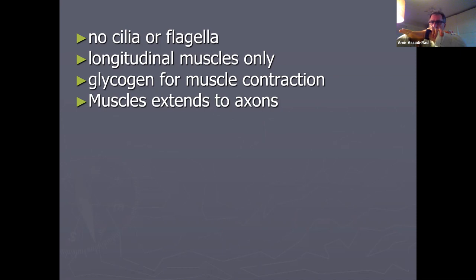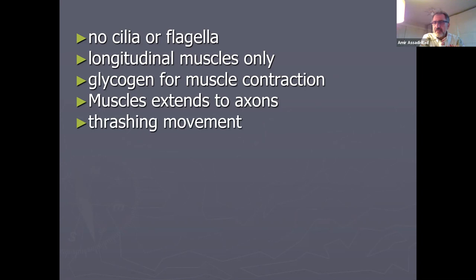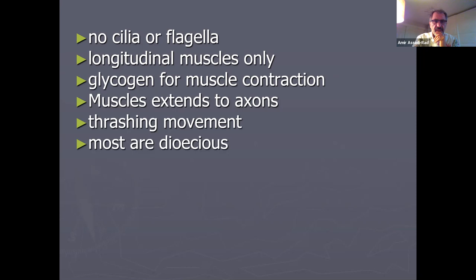In most animals, the neuron goes to the muscle and releases neurotransmitters to cause contraction. In nematodes, it is the opposite: the muscle cell extends to the neuron, and then the neuron releases neurotransmitters, causing the muscles to contract. They move by a thrashing movement — not by peristalsis like the esophagus. Hydrostatic pressure and the cuticle cause the animal to curve, while longitudinal muscles straighten it.